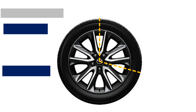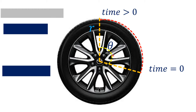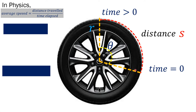We consider a car's wheel — it definitely has a radius because it is circular. Now, if it is moving, there is a generated central angle theta. When time is zero, the car is not moving. When time is greater than zero, the car is moving. This red represents the arc length, but now we are referring to it as the distance covered by the object at a particular time. In physics, average speed equals distance traveled over time elapsed.